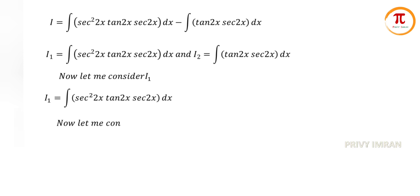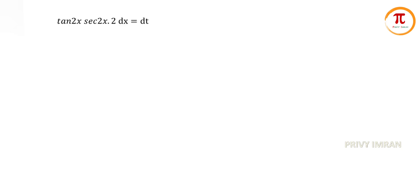In I1, let me substitute secant 2x is equal to t. Now differentiate with respect to x on both sides. Then tan 2x into secant 2x into 2 dx is equal to dt. Hence tan 2x into secant 2x dx is equal to 1 by 2 dt.